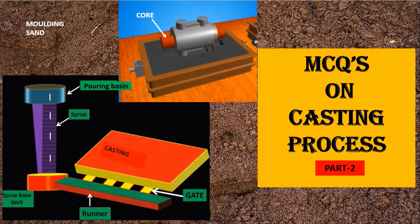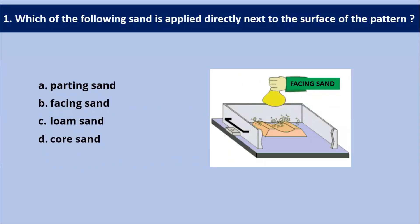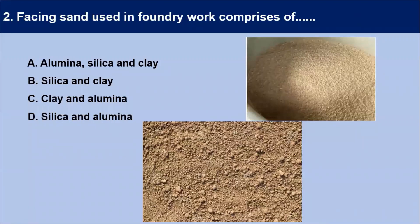The first MCQ: which of the following sand is applied directly next to the surface of the pattern? The answer is facing sand, because facing sand is used next to the pattern for obtaining cleaner and smoother casting surface. It comes in contact with the molten metal when the mold is poured, so facing sand has high strength and refractiveness. Your answer is B — facing sand.